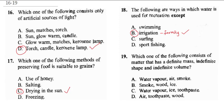Question 19 says: which one of the following consists of matter that has definite mass, indefinite shape, and indefinite volume? The matter with definite mass but indefinite shape and indefinite volume is gas. Gas takes the shape and volume of its container — air has no definite volume and no definite shape otherwise. So every option should be a gas. Water vapor is a gas, air is a gas, smoke is a gas. The correct answer is A. Other options include solids like wood, ice, and toothpaste mixed in, making them wrong.